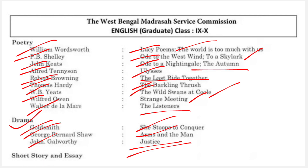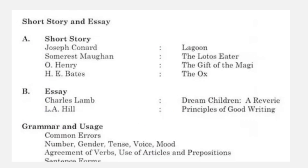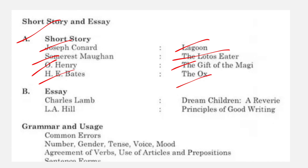Short one-liner and question-answer type questions have also been given in different sections on YouTube. In the short story section, we have Joseph Conrad's 'The Lagoon,' Somerset Maugham's 'The Lotus Eater,' O. Henry's 'The Gift of the Magi,' and 'The Ox.' These are the four short stories included in the exam.